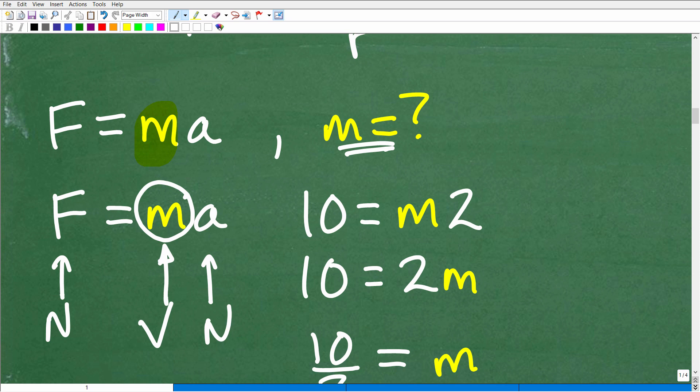This is a good way to approach rewriting formulas and equations in different variables. For example, I got F is equal to M times A. Let's just make up a number for F, an easy number. How about 10, and then M, that's our variable, so we'll keep that as M. We'll make up an easy number for A. How about like 2.